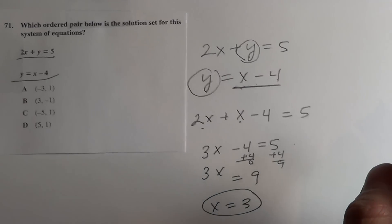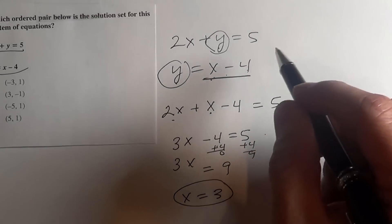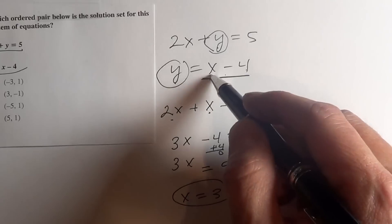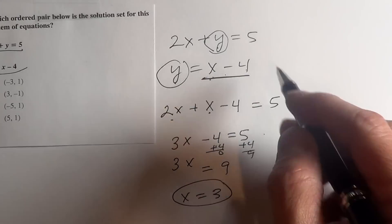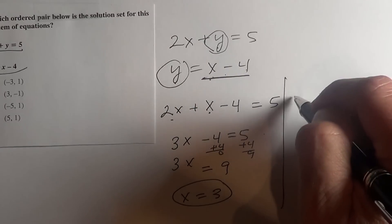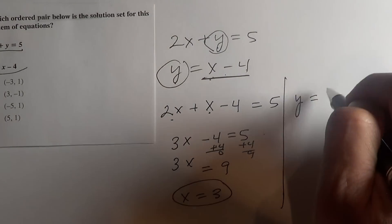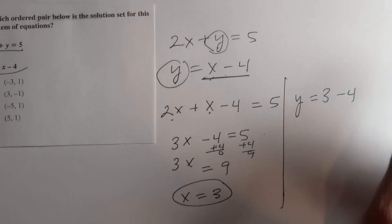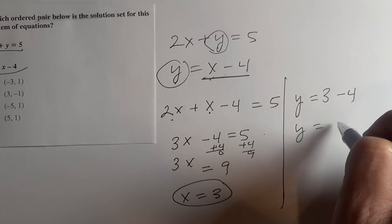So now we know that x equals 3. What we want to do next is solve for y. So let's do y equals x is 3 minus 4, so y equals negative 1.